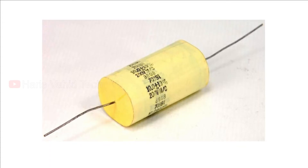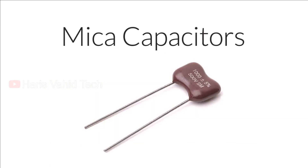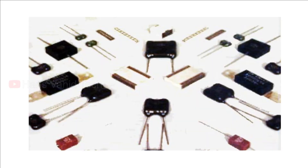One disadvantage of paper capacitors is that they easily absorb moisture from the air, which may cause a change in their insulation capability. Mica capacitors, by contrast, are more stable, reliable, and high-precision ones.